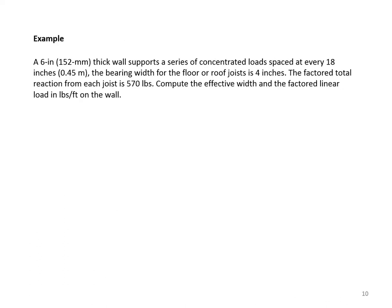Let's look at an example. A six-inch thick wall supports a series of concentrated loads spaced at every 18 inches. The bearing width for the floor or roof joists is four inches. The factored total reaction from each joist is 570 pounds. We want to compute the effective width and the factored linear load in pounds per foot on the wall.